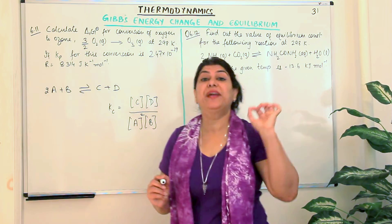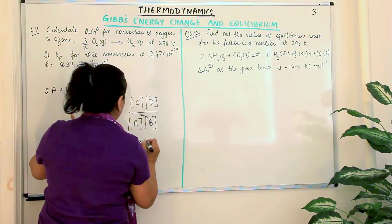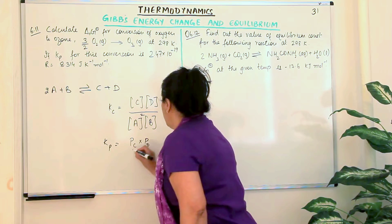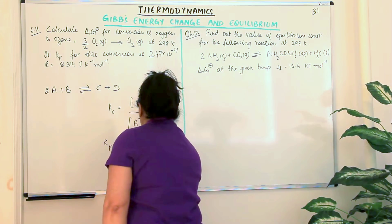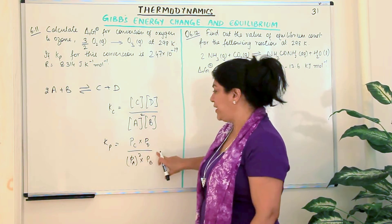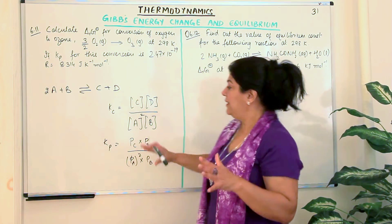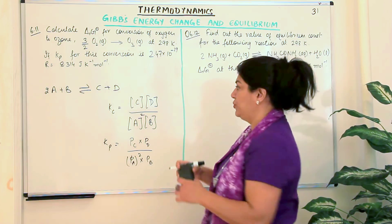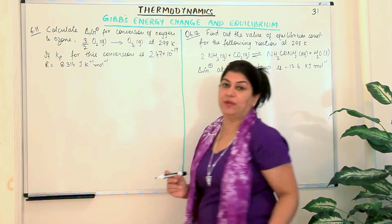Here we also have the equilibrium constant in terms of pressure, Kp. It means the partial pressure of C multiplied by the partial pressure of D, divided by the partial pressure of A raised to the stoichiometric power, into the partial pressure of B. It is the same concept — only expressed in terms of pressure rather than concentration. Since we haven't done the equilibrium chapter yet, it is important to understand these before applying the equation relating free energy to equilibrium constant.